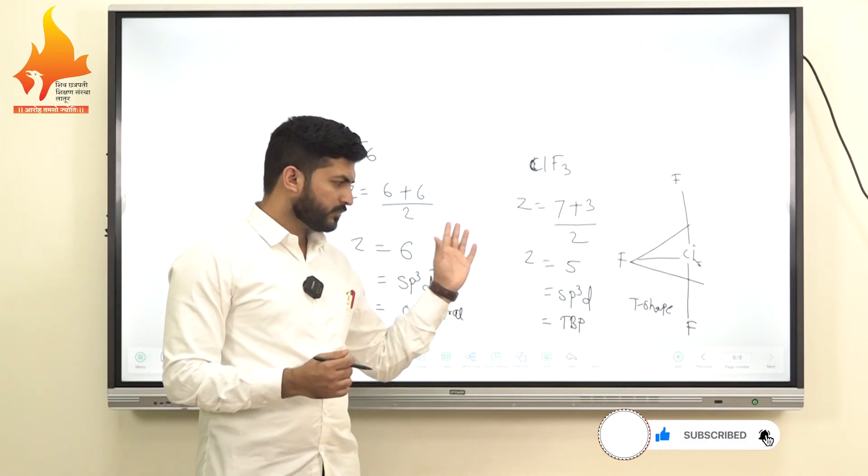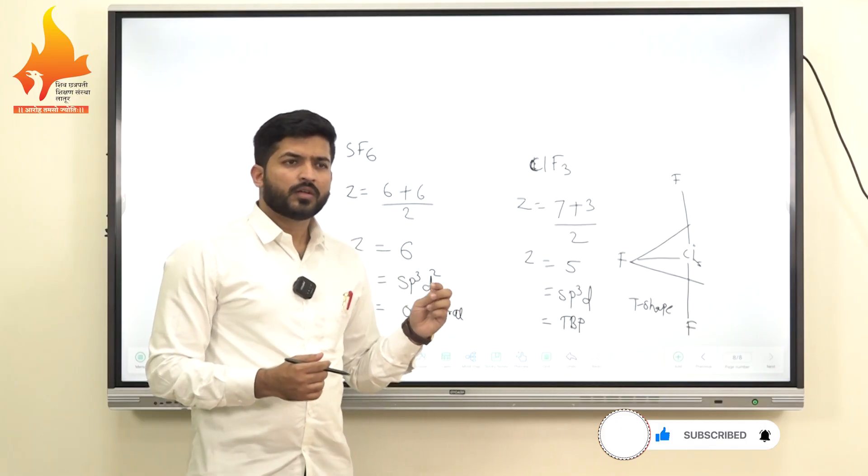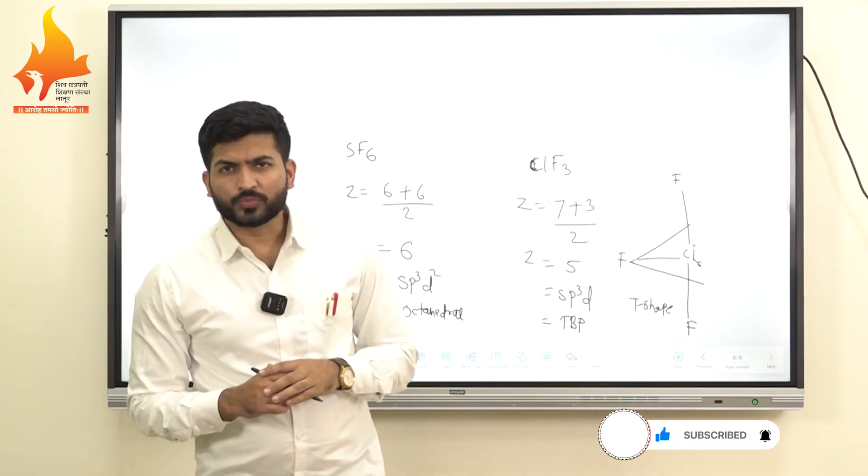So these are the examples of VSEPR theory by which we can calculate the hybridization and find out the geometry and shape of given molecules. This is all about VSEPR theory. Thank you.